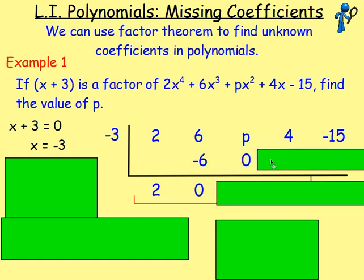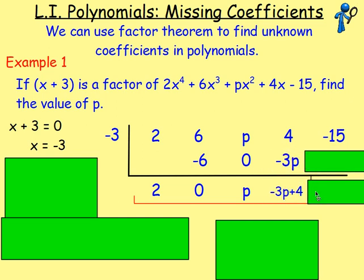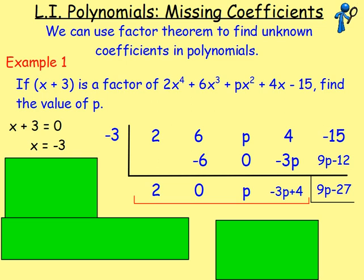Add the columns, multiply across, add the columns again — p add 0 is just p. Multiply by negative 3, we've got negative 3p. Add, we've got negative 3p plus 4. Multiply by negative 3 — multiply each term by negative 3 — giving me 9p minus 12. And add in this negative 15, I'd have 9p take 27.